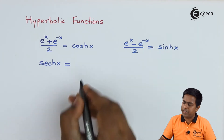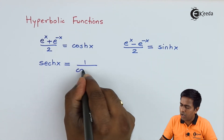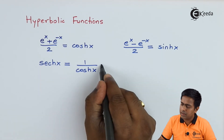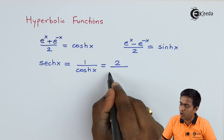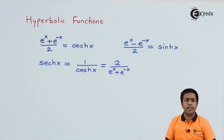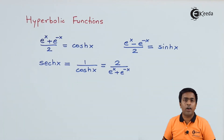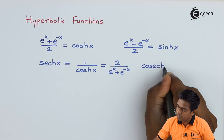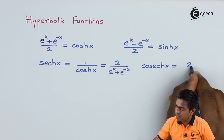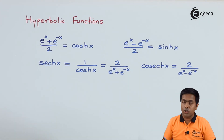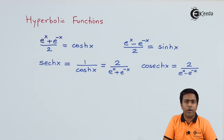For hyperbolic sech of x, we take 1 upon hyperbolic cos of x. Finding the reciprocal gives us 2 upon e to the power x plus e to the power minus x. Similarly, hyperbolic cosech of x equals 2 divided by e to the power x minus e to the power minus x.